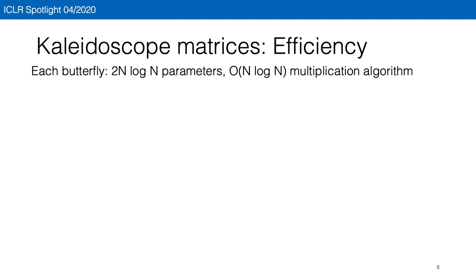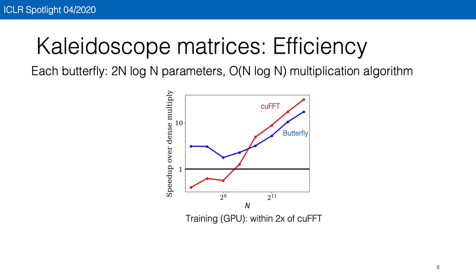In terms of efficiency, each butterfly matrix of dimension n has 2n log n parameters and an n log n multiplication algorithm. We provide fast implementation on GPU that's within 2x of the very optimized cuFFT, which only does the Fourier transform. So kaleidoscope matrices are practically efficient in memory and speed.